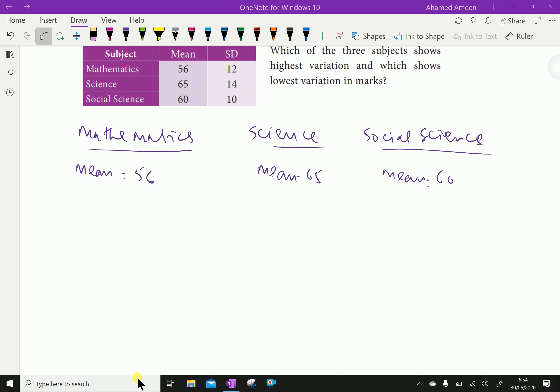Standard deviation of mathematics is 12. SD for science is 14. SD for social science equals 10.